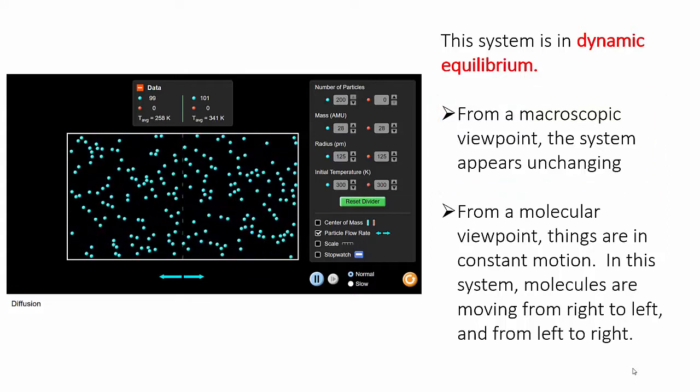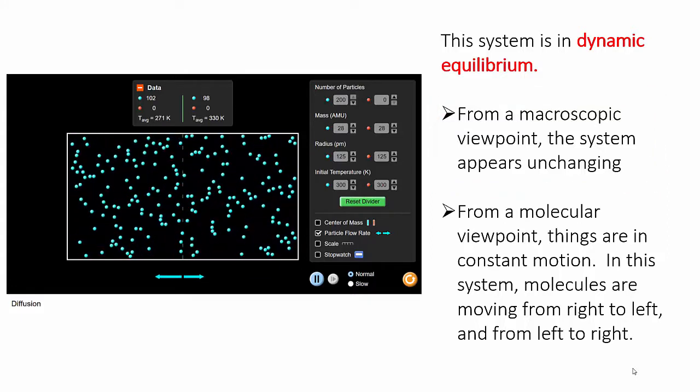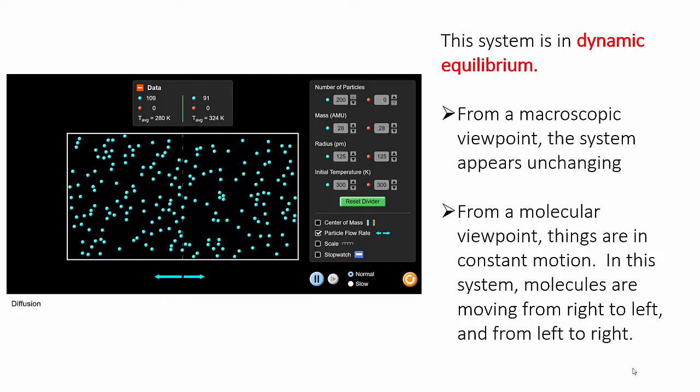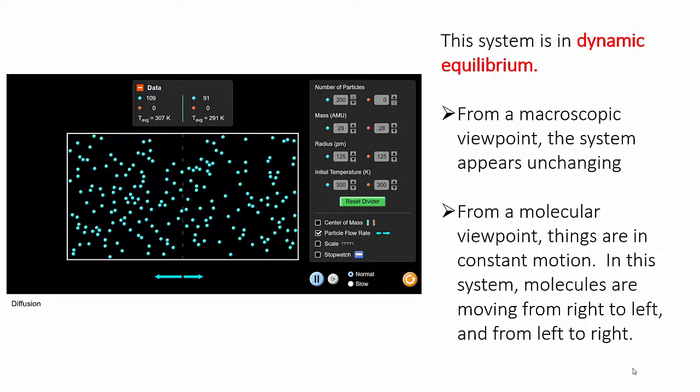Remember the larger the system, that is the more molecules that are involved, the truer this becomes. Because this simulation is looking at a very small number of particles, the fluctuations are more obvious.